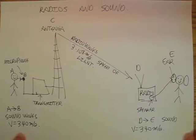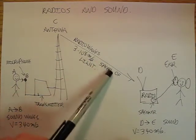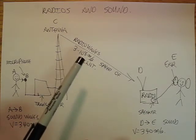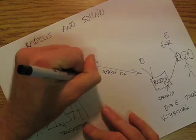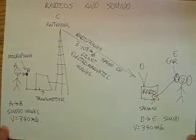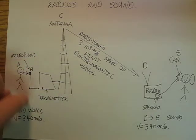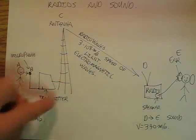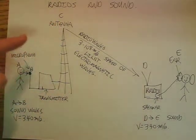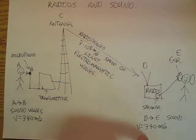Sometimes people say, 'When I listen to the radio, that's sound, so it goes at 340 meters per second.' When we're talking about radio waves, radio waves are a type of electromagnetic radiation going at 3 times 10 to the 8th meters per second — they are not sound waves, they are electromagnetic waves. So: the person speaks into a microphone at 340 meters per second; through the electronics it travels at roughly half to three-quarters the speed of light to the antenna; then at the speed of light from the antenna to your radio; and then from your radio to your ear, it's back to the speed of sound.